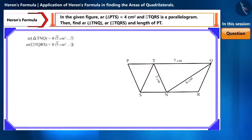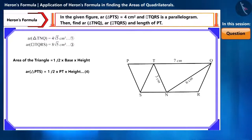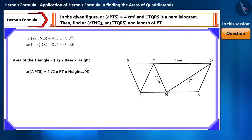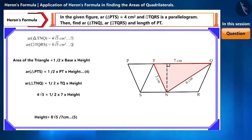In the next part, in triangle PTS, we need to find the length of PT. We know the area of triangle PTS, but we don't have any information about the sides. If we can somehow find the height of this triangle, then using the formula for the area of a triangle — half multiplied by base multiplied by height — we can find the length of base PT. We are given the base TQ of triangle TNQ is 7 centimetres, and we obtained its area as 4 root 5 square centimetres. We can find the height by substituting these values, obtaining the height as 8 root 5 by 7 centimetres.